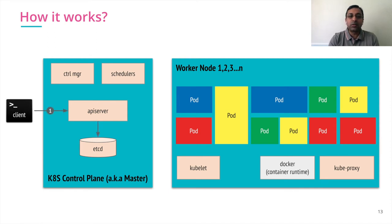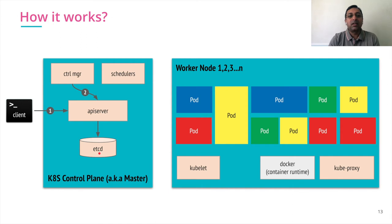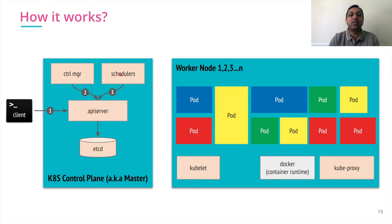Let's understand how all this communication works within the Kubernetes world. A client sends a request to the API server to deploy an application in the Kubernetes cluster. That request is received by the API server and stored in etcd. The control manager keeps looking at what requests are in etcd, checks the current state, and decides what needs to be done. Once a decision is made — say, spin up three pods — the scheduler comes into the picture, looks at the state of the worker nodes, and assigns pods to specific worker nodes.